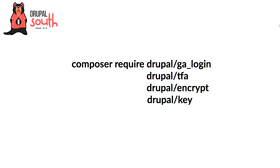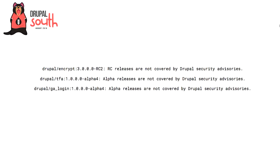Underneath TFA there's the encrypt module and the key module. However, all of these modules require quite a bit of knowledge to set up — you have to know what an encryption key is, set up encryption profiles, configure them, find all these modules and put them together. And some of these aren't covered by Drupal's security team. So depending on the scope of the security audit you're going through, if you fix one problem, you may actually introduce another one by adding alpha and RC modules.